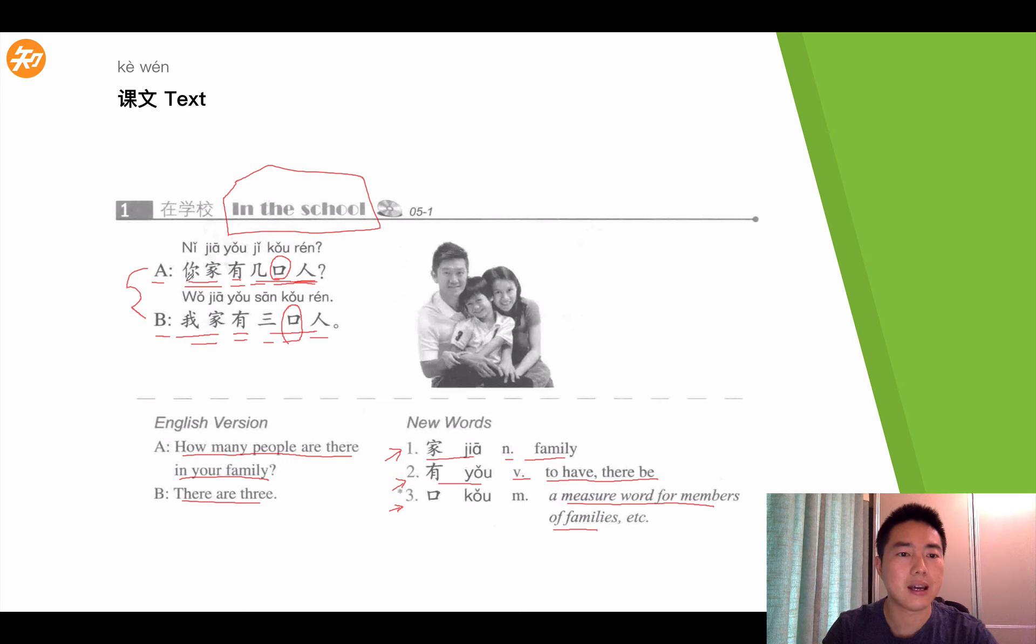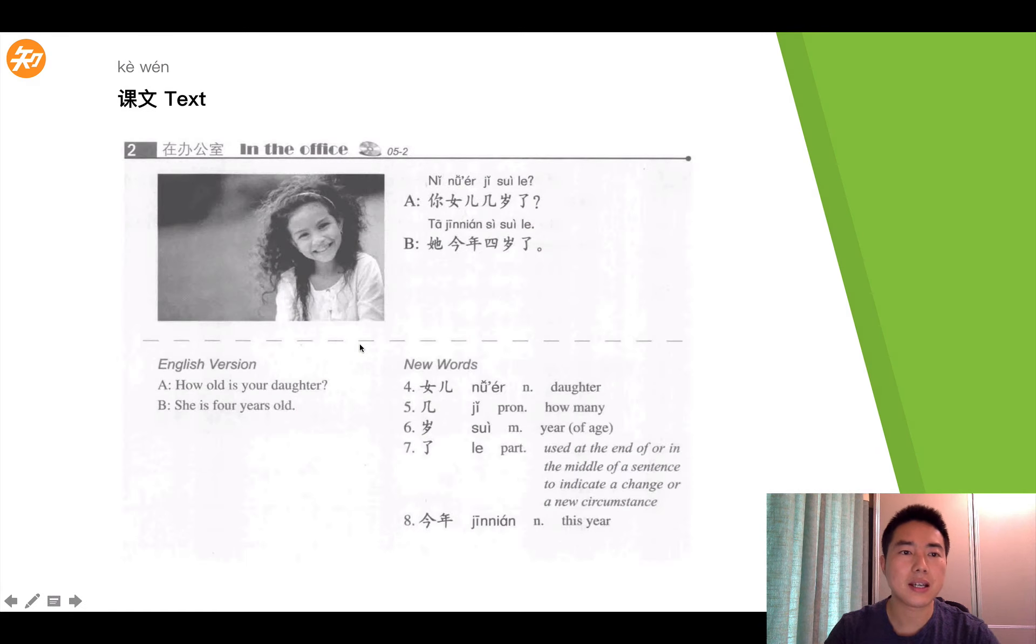A said, 你家有几口人? B answered, 我家有三口人。Okay, let's go to text two. In text two, this conversation happens in the office.